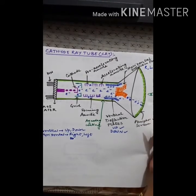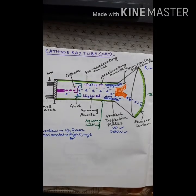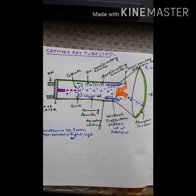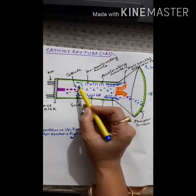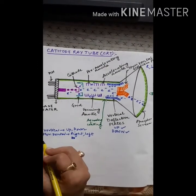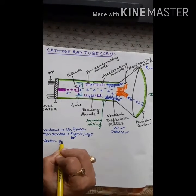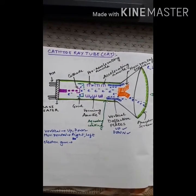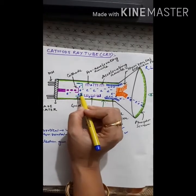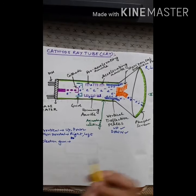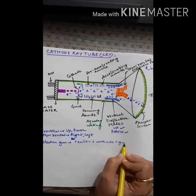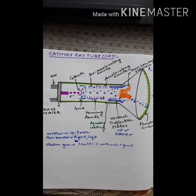The metal used in the phosphor screen is zinc sulfate, zinc tungstate, or zinc oxide. The electron gun is basically the heater plus the cathode plus the grid — these three things together are known as the electron gun.